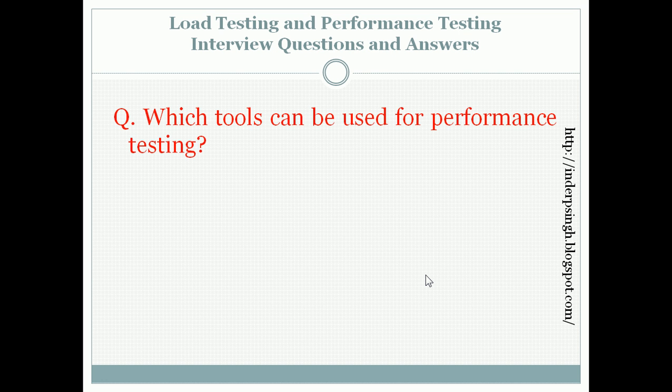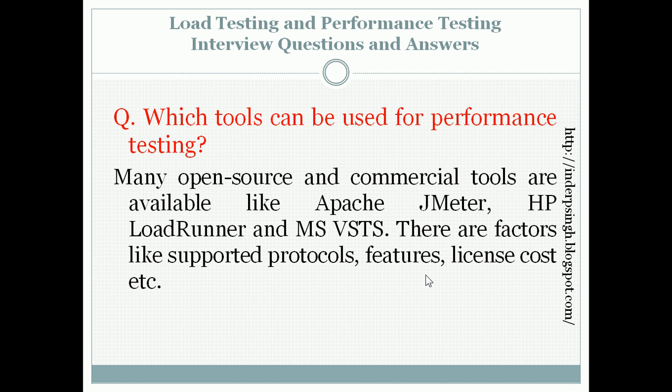The next question is: which tools can be used for performance testing? There are many publicly available tools — open source and commercial — like Apache JMeter, HP LoadRunner, and Microsoft VSTS. Different tools support different protocols, have different features and reports, and have different license costs. In addition to publicly available tools, we can also develop our own in-house tools for performance testing.